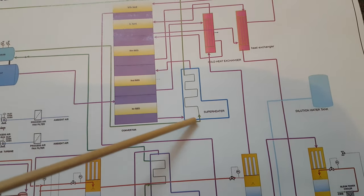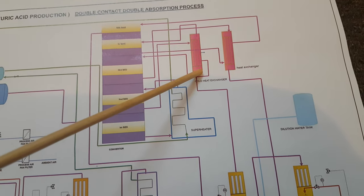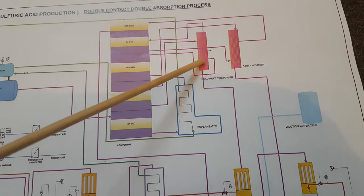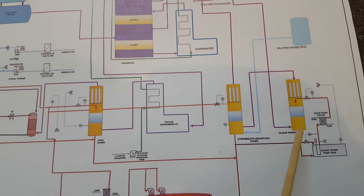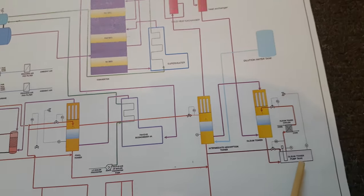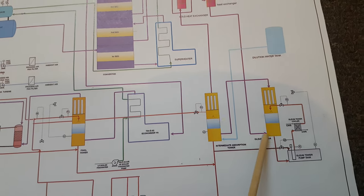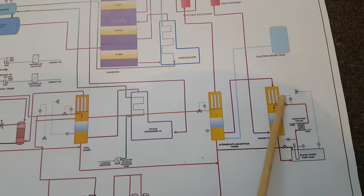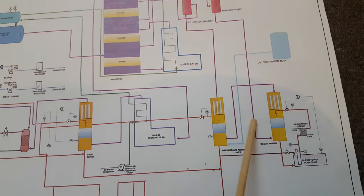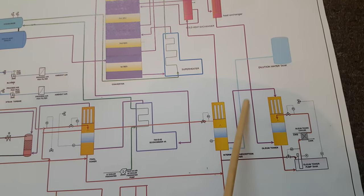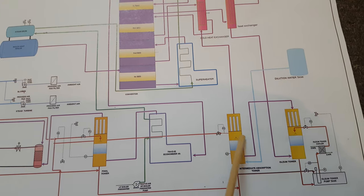This is the superheater, which produces superheated steam, and this is a heat exchanger which exchanges the heat of the process gas. This is the oleum tower and oleum pump tank — with the help of a pump, oleum is pumped to the tower and again drained back, so continuous circulation takes place. From the bottom gas goes in and from the top gas is absorbed.